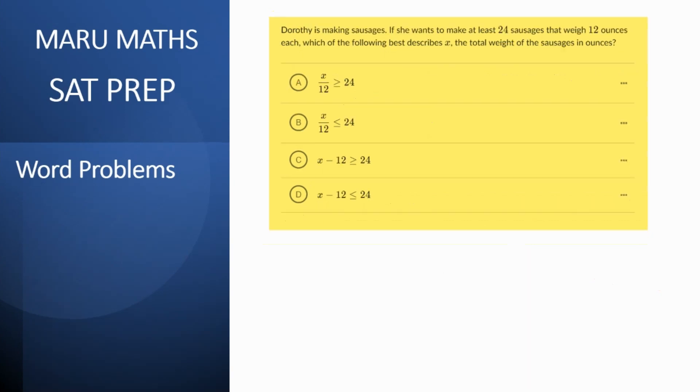Now let's take another question. Here you have Dorothy is making sausages and she wants to make at least twenty four. That means your inequality has to be greater than equal to twenty four. That weigh twelve ounces each and x is the total weight. So x divided by twelve. So total weight divided by weight of each sausage should be greater than twenty four. So our answer should be option three.